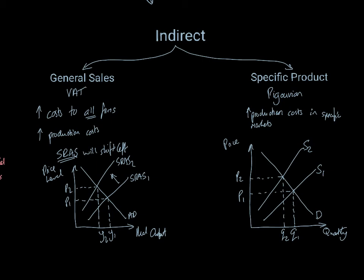If it's a pivoting shift, then it's a percentage value. So the more expensive the product becomes, the bigger the shift. So that's why it becomes really important to think about the impact of the different sorts of taxes which a government can impose.